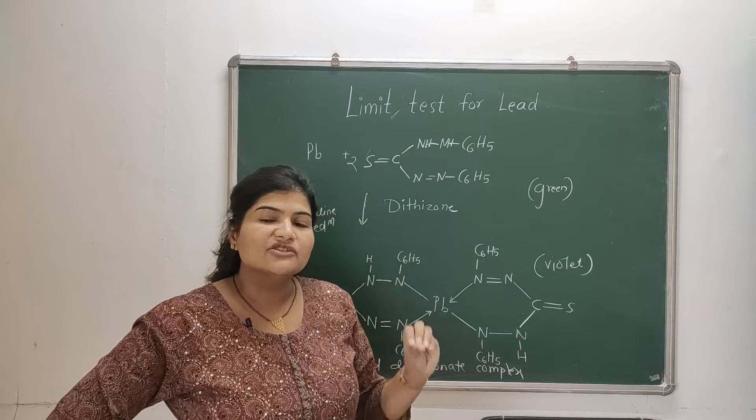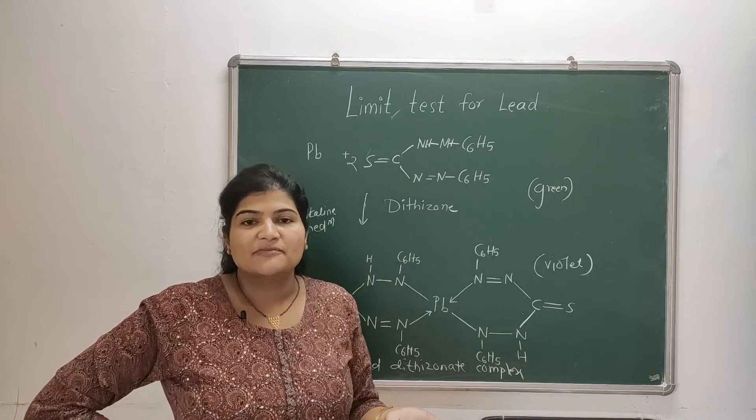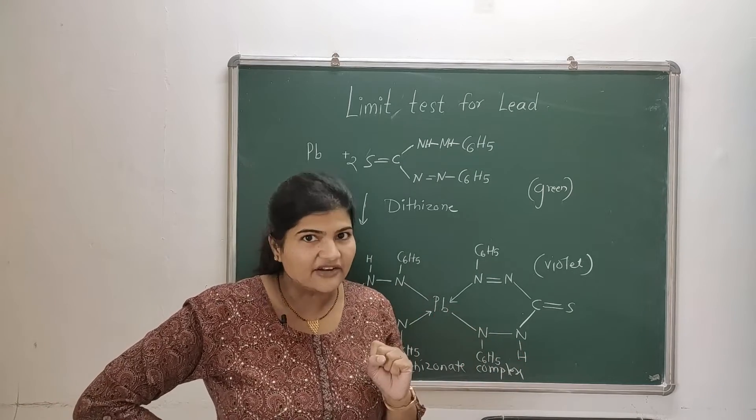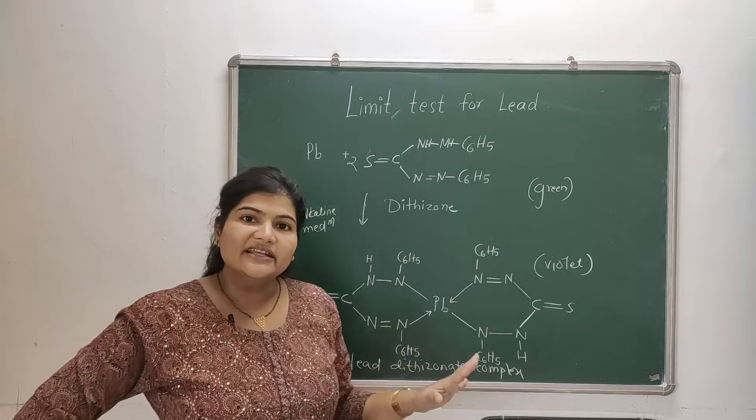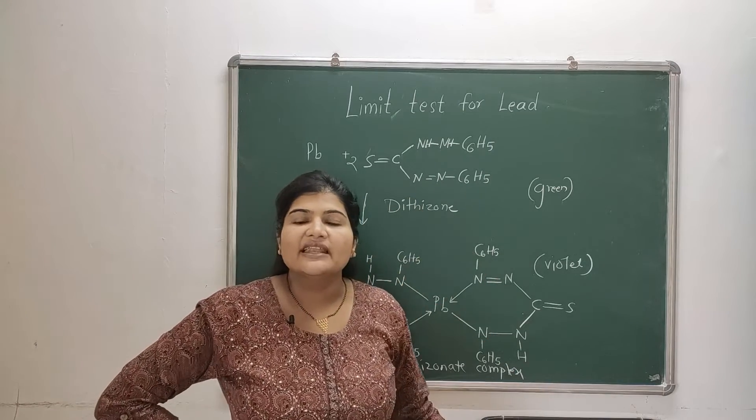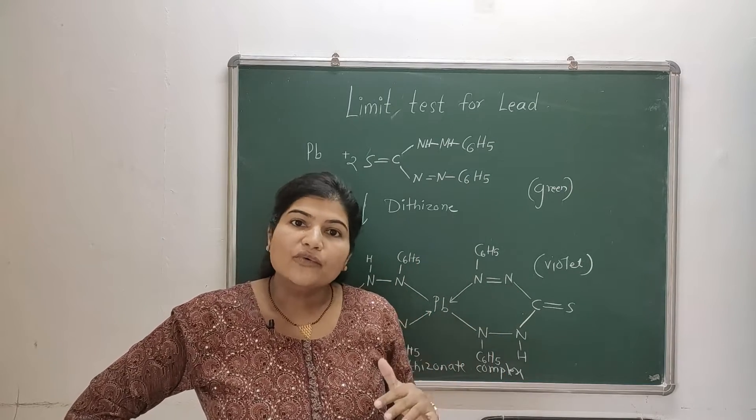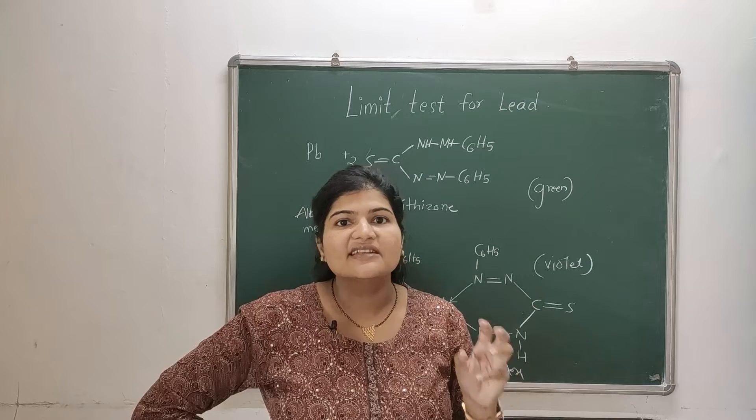So one more point I want to add here - in order to avoid the interference of other metal ions, because when we are extracting lead there is a possibility that other metal ions may interfere. So to avoid the interference, what we can do during the step of extraction: we can adjust the pH at the optimum level.